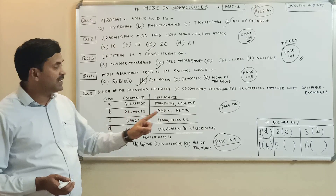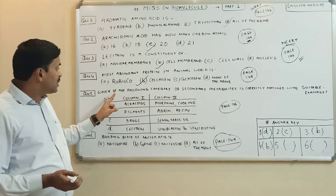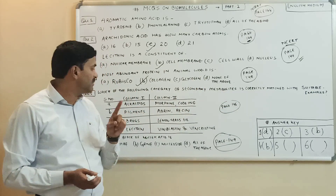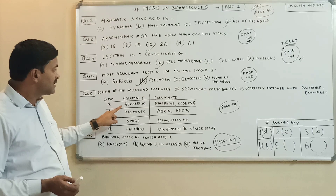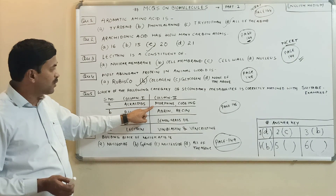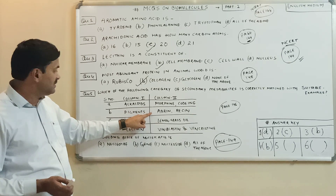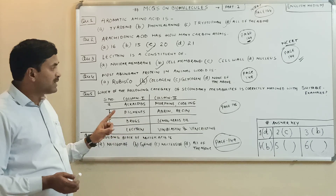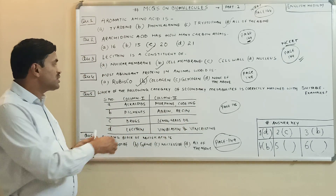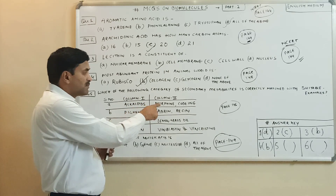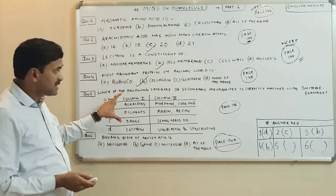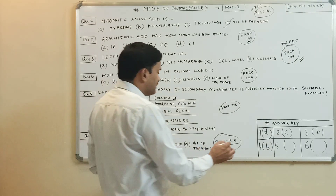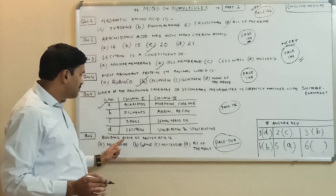Next question: which of the following categories of secondary metabolites is correctly matched with a suitable example? There is a table given. In column one: alkaloids, and in column two: morphine and codeine. Other options include pigments matched with abrine and racine, and drugs matched with lemongrass oil and lecithin. On page number 146 of NCERT, the correct match is alkaloids, because morphine and codeine are listed as alkaloids in the table. So the answer to question number five is option A.